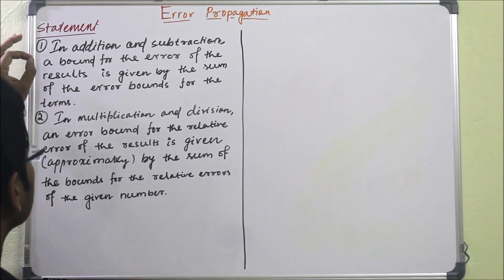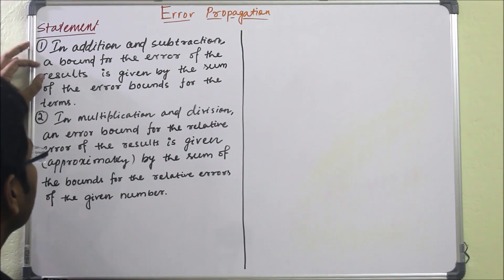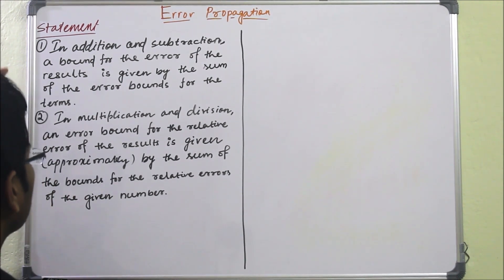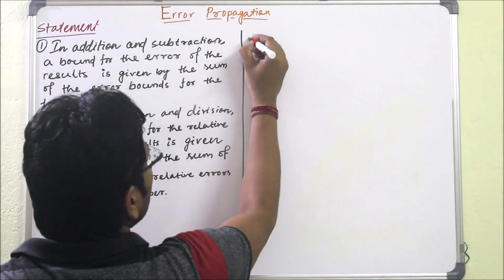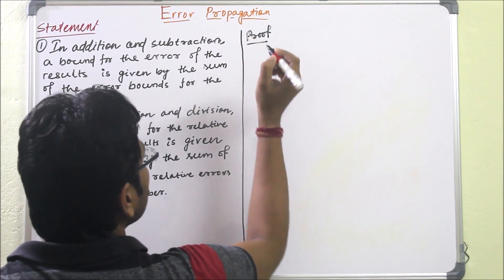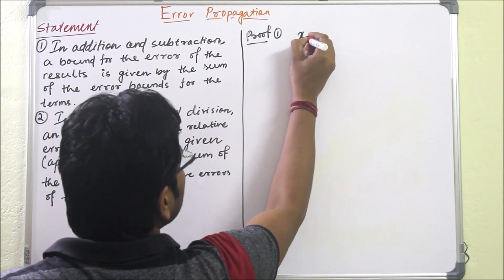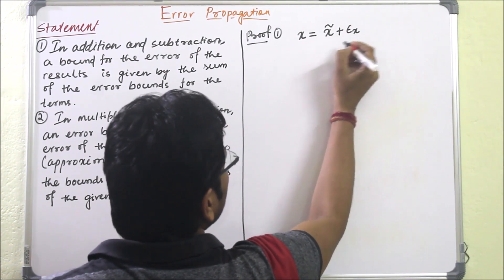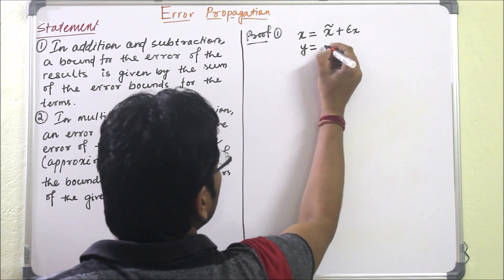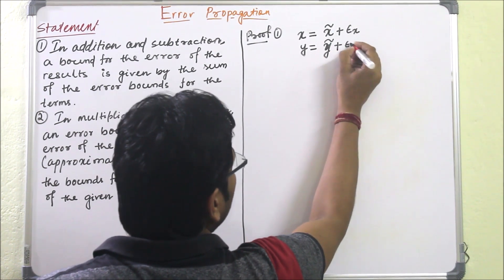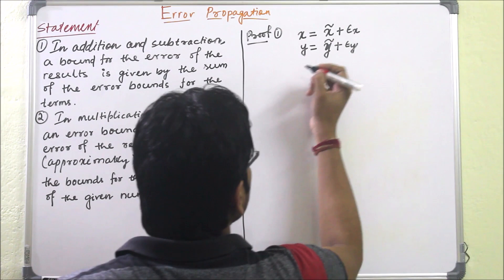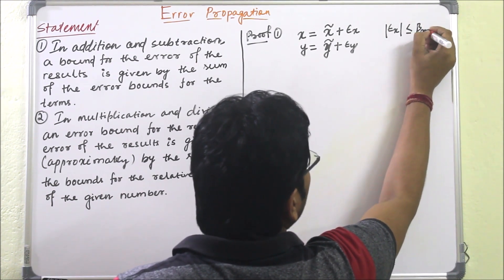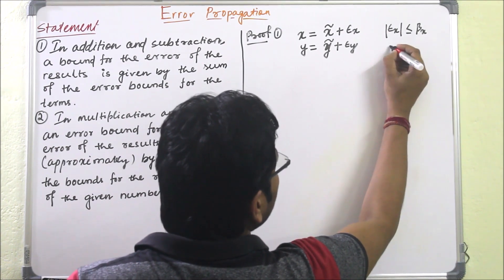The first statement of the error propagation theorem concerns addition and subtraction of errors. It says: in addition and subtraction, a bound for the error of the result is given by the sum of the error bounds for the terms. To prove this, let x be the true value and x-tilde be the approximate value, with error epsilon_x. Similarly, y is the true value and y-tilde is the approximate value, with error epsilon_y.